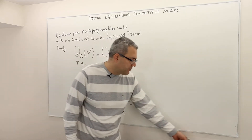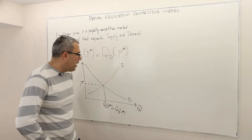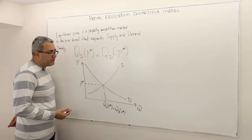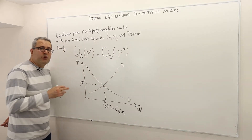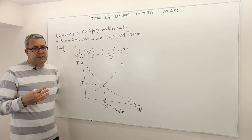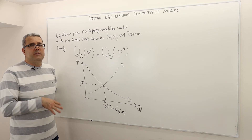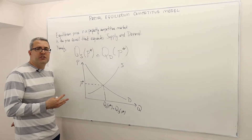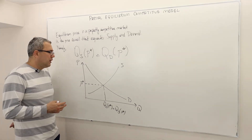So it's an intersection point. At this price, no market participants — meaning the buyers and the sellers — have any incentive to change the price.